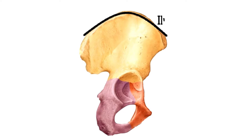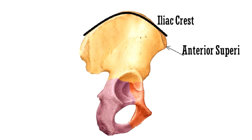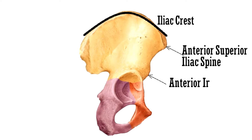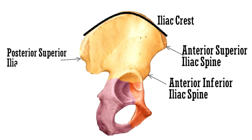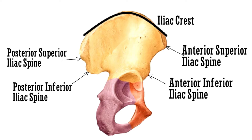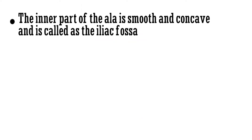This ridge is the iliac crest that is convex upwards. This expanded part is the anterior superior iliac spine, and just below it is the anterior inferior iliac spine. This expanded part is the posterior superior iliac spine, and like the anterior part, it also has the posterior inferior iliac spine below the superior. The inner part of the ala is smooth and concave and is called the iliac fossa.